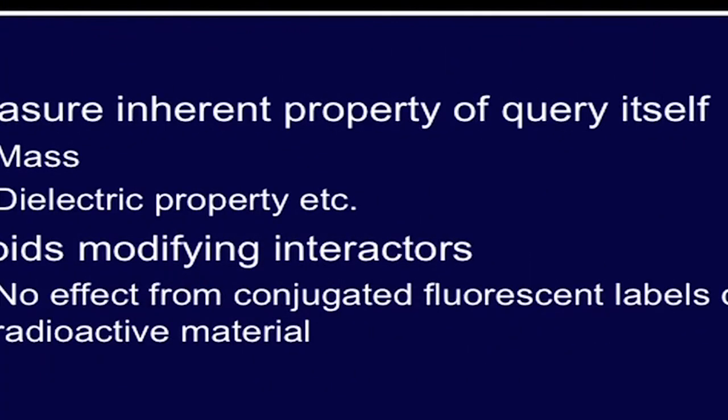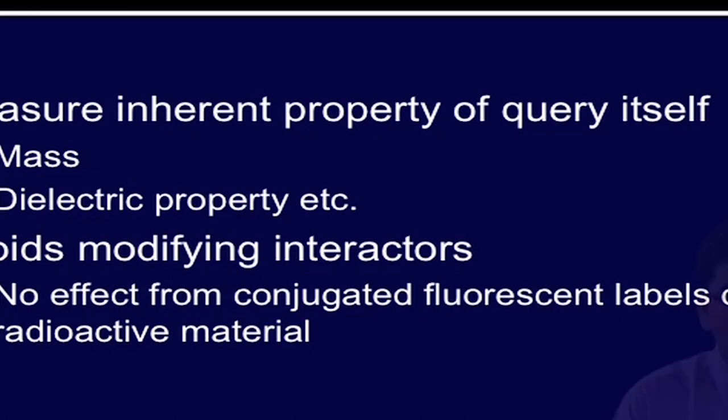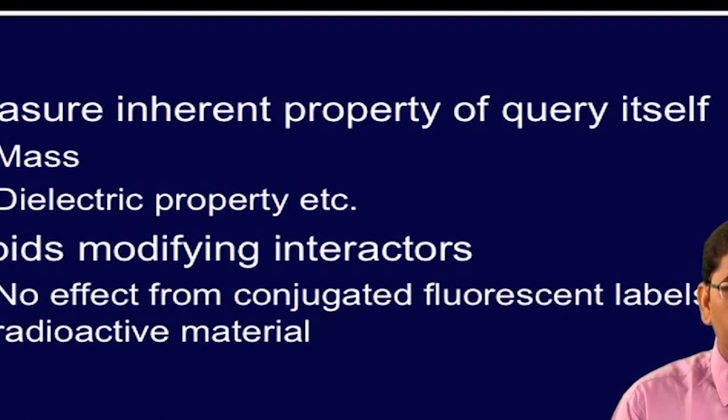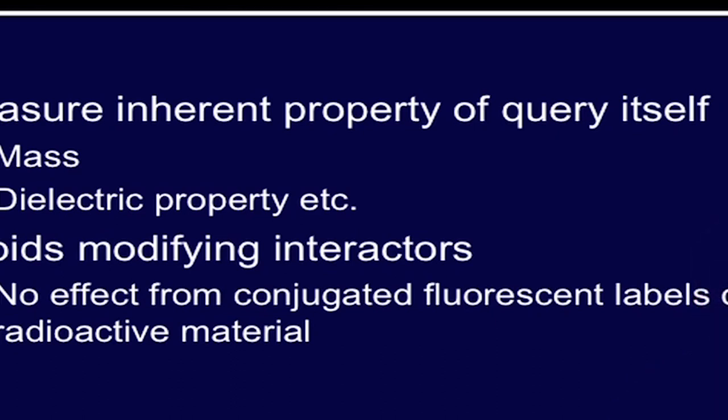Let us focus on discussing the aspects of label free measurements. These rapidly evolving techniques aim to provide data by relying on measurement of inherent biophysical properties of the query molecule, such as molecular weight, refractive index, dielectric property, etc. It allows monitoring of molecular events in real time, in a high throughput manner, eliminating the need for addition of secondary reactants, which is the case in label based detection techniques. Additionally, the label free approach avoids modification of interacting molecules, since there is no label added separately, there is no interfering effect from conjugated fluorescence labels or radioactive material.